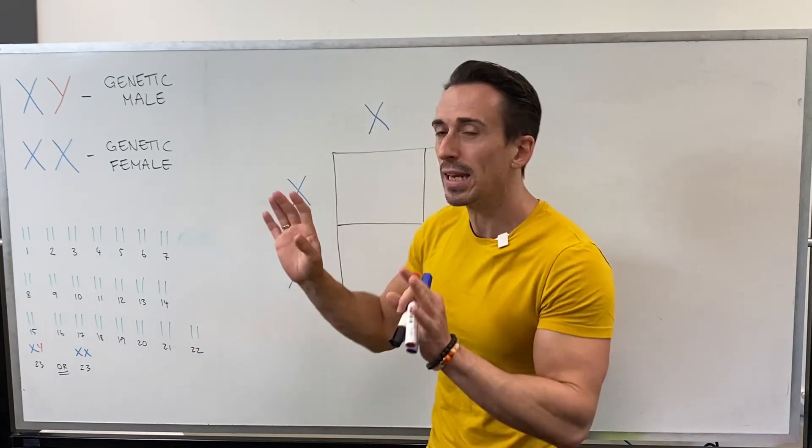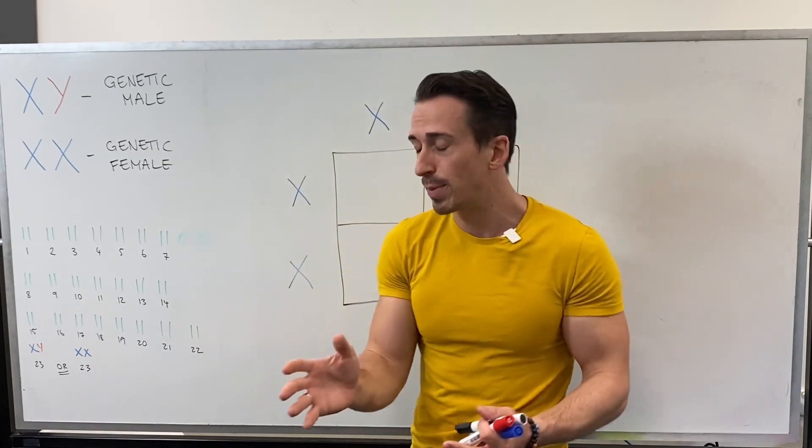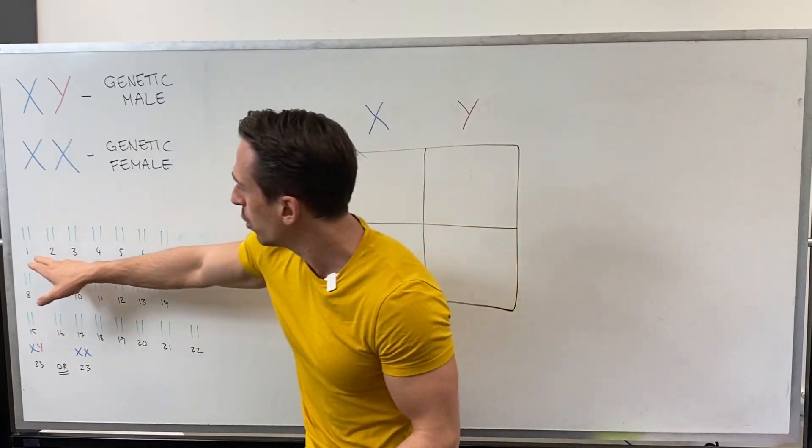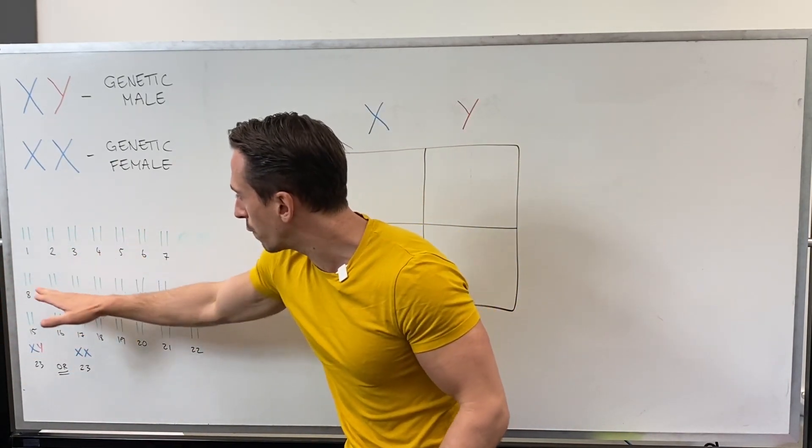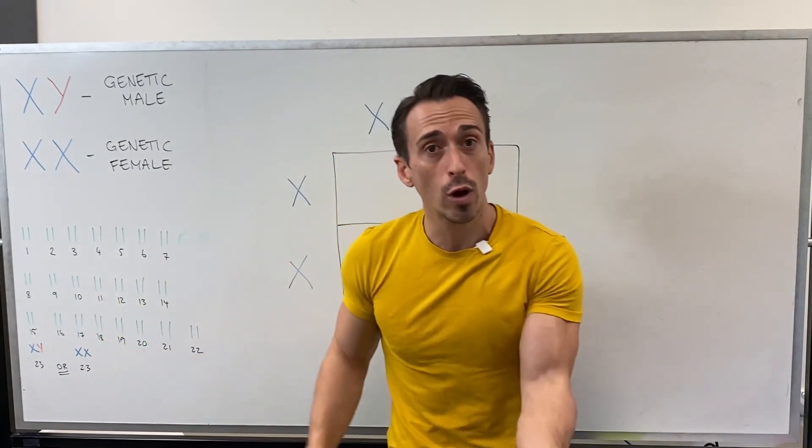Remember the fact that we inherit 23 pairs of chromosomes. Pairs because one comes from mum, one comes from dad. So for example, chromosome one, we have two of them, one came from mum, one came from dad, and all the way through for 22 pairs. These are called our autosomal chromosomes.